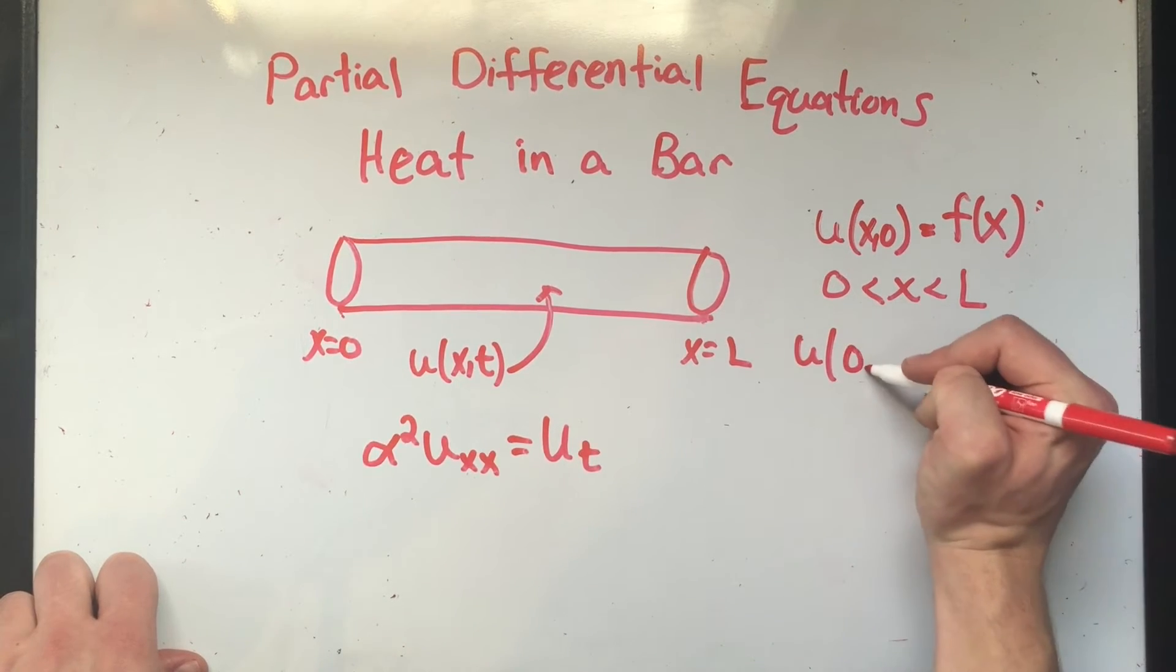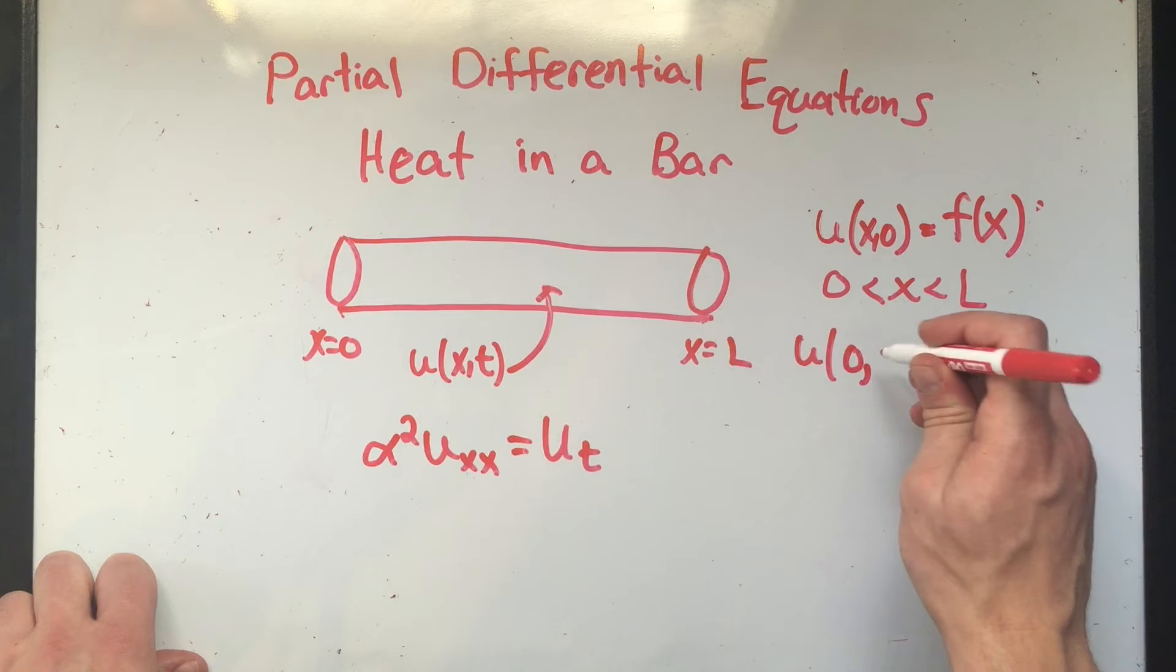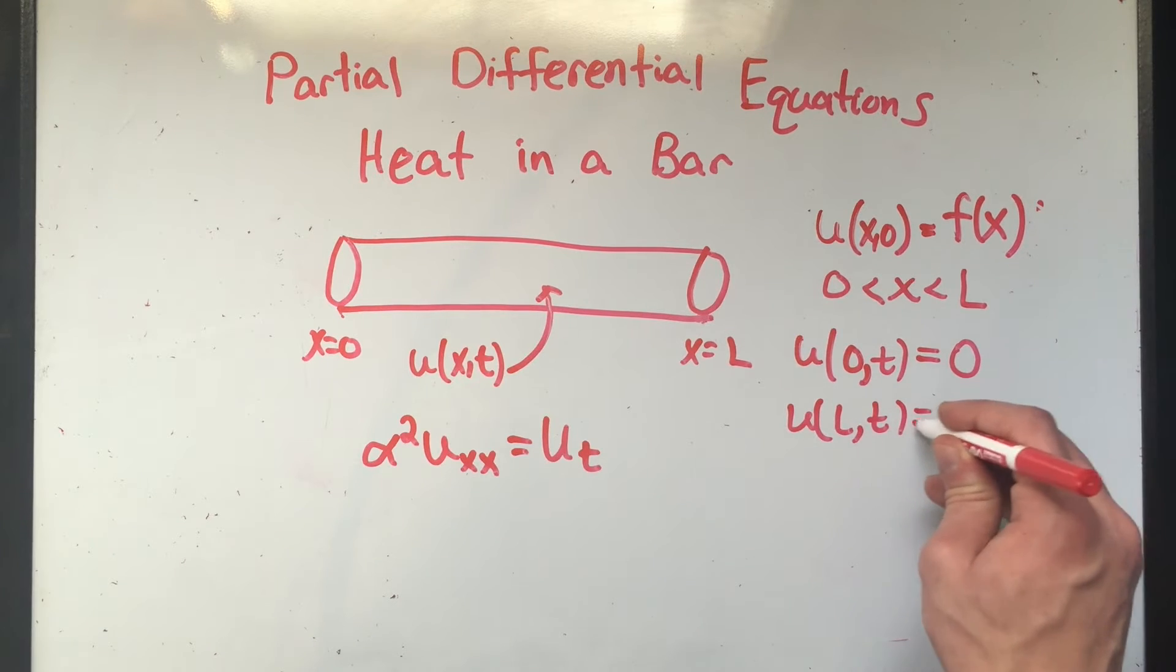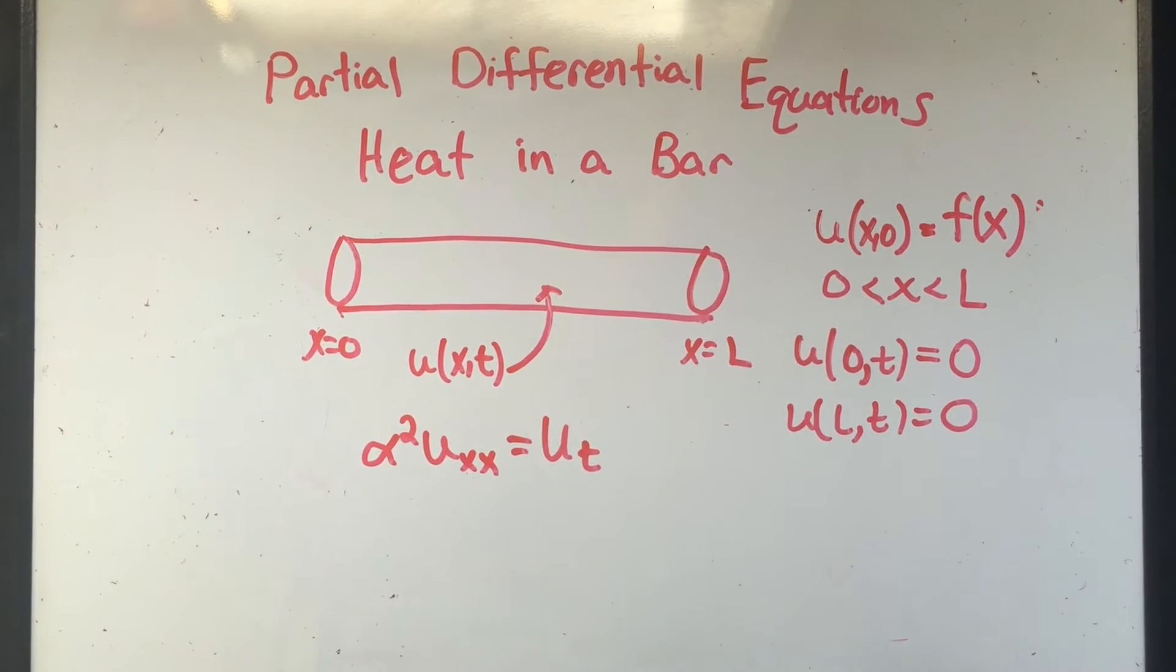Now there's some other things we need to do. If I plugged in zero for X at any time, that is the very left side of my bar, I'm going to assume that temperature is zero. And I'm going to do the same for the other side of the bar. Now I can get into why, but more or less they're going to be trivial solutions or they're going to be boring when we don't do that. So we're just going to look at these initial conditions, these boundary value conditions.